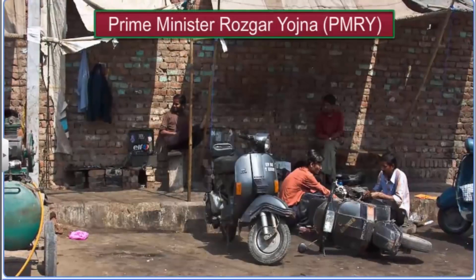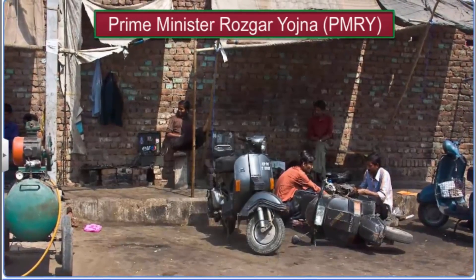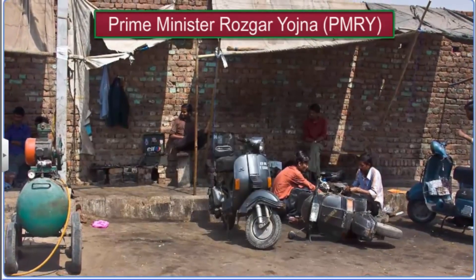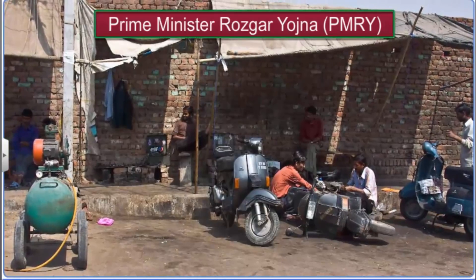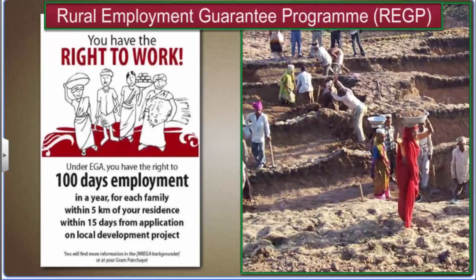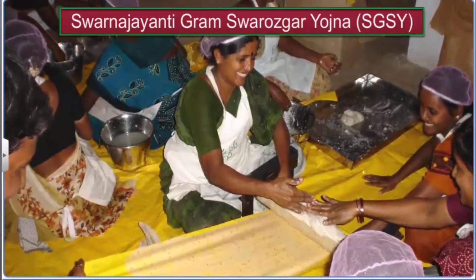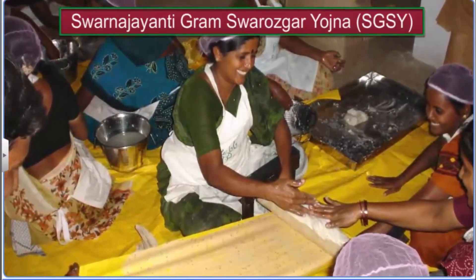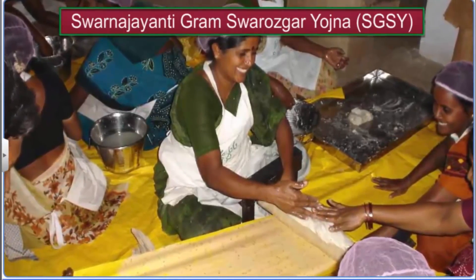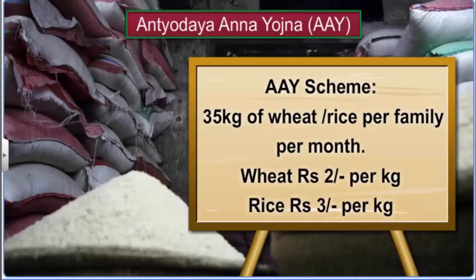The Prime Minister Rozgar Yojana was launched in 1993 to create self-employment opportunities for educated, unemployed youths in rural areas and small towns, assisting them in setting up small industries and businesses. The Rural Employment Guarantee Program launched in 1995 also aims to generate self-employment in rural areas and small towns. The Swarna Jayanti Gram Swarozgar Yojana started in 1999 aims at organizing poor families into self-help groups and providing bank loans and government subsidies to start small businesses. The Antiyodaya Anna Yojana was started in 2000 to provide food grains to poor families at subsidized rates, offering 35 kilograms of wheat or rice per month through the public distribution system.